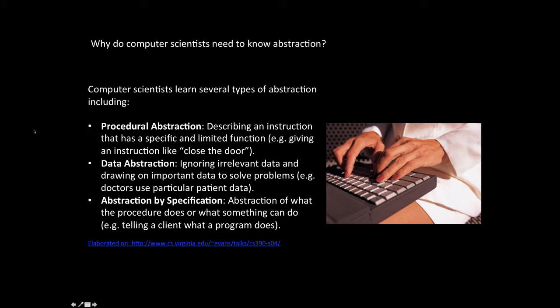Data abstraction is another process which involves ignoring irrelevant data and drawing on important data to solve problems. For example, this is what doctors typically do when they see a patient. They ignore facts like eye colour or hair colour, but they'll be drawing on data like blood pressure, temperature, and patient symptoms. Abstraction by specification is another process that computer scientists use. It involves describing what a procedure does without telling every minute detail that led to that procedure being done. For example, telling a client what a program does.